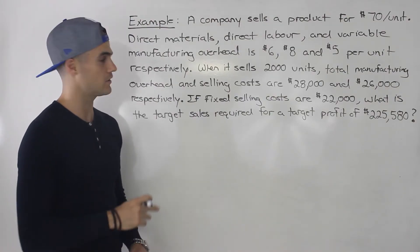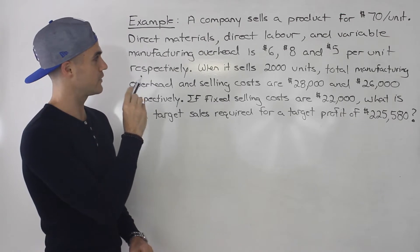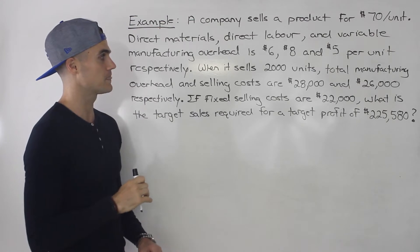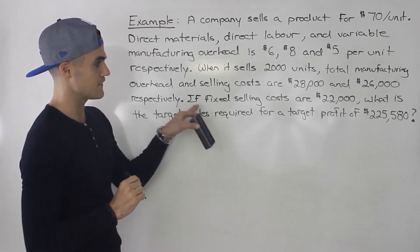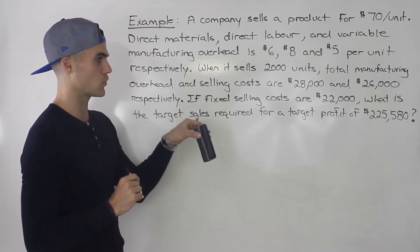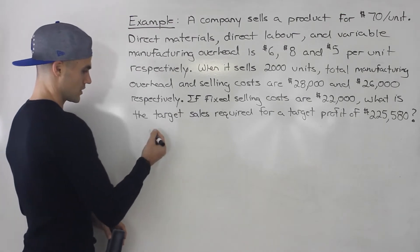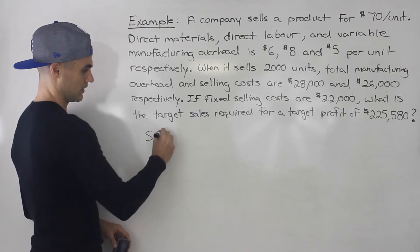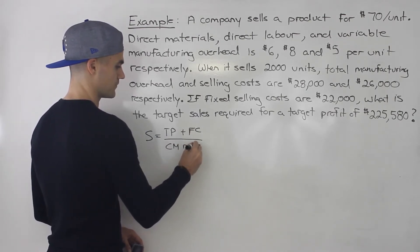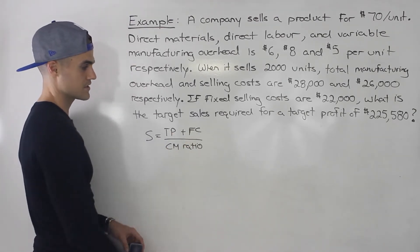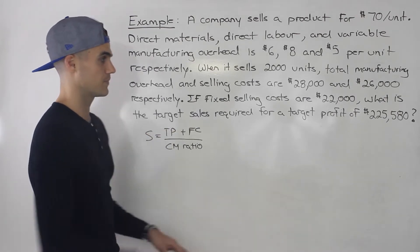Let's show how all this works through an example — it's going to be pretty tough, just as a heads up. A company sells a product for $70 per unit. Direct materials, direct labor, and variable manufacturing overhead are $6, $8, and $5 per unit respectively. When the company sells 2,000 units, total manufacturing overhead and selling costs are $28,000 and $26,000 respectively. If fixed selling costs are $22,000, what is the target sales required for a target profit of $225,580? Notice we're solving for target sales, and the formula is: target profit plus the fixed costs over the contribution margin ratio. The only direct piece of information we have is the target profit.